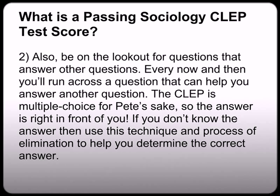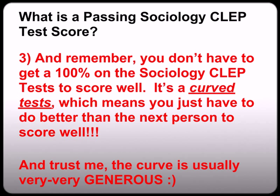Number two: always be on the lookout for questions that answer other questions. Every now and then you'll run across a question that can help you answer another. The CLEP is multiple choice — the answer is right in front of you. If you don't know the answer, use this technique and process of elimination to help determine the correct answer. Number three: remember, you do not have to get 100% on the Sociology CLEP to score well. It's a curve test, and the curve is usually very, very generous.